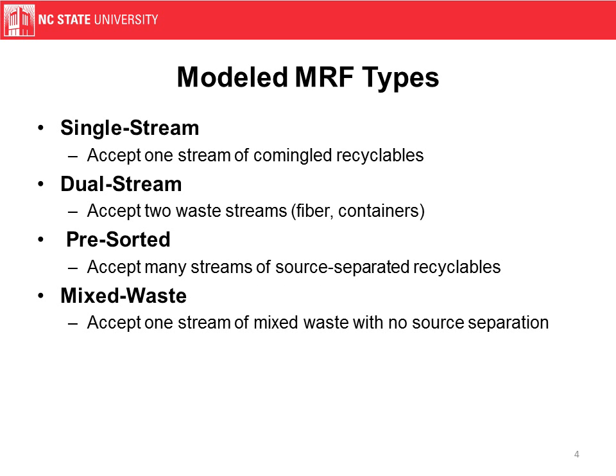We've modeled four MRF types. A single stream MRF accepts one stream of commingled recyclables. You often see these in suburban or urban areas like Raleigh, where you put out a residual can with all of your waste that's not recycled, and beside it you have a recyclable bin with all the source-separated recyclables you've created.